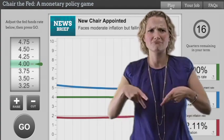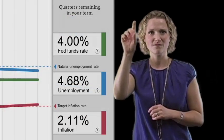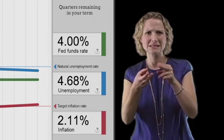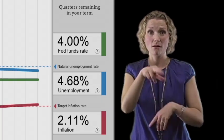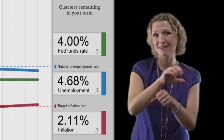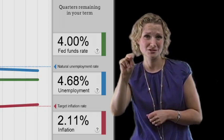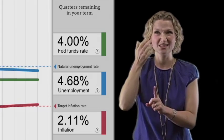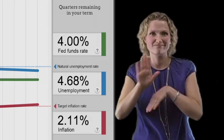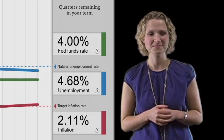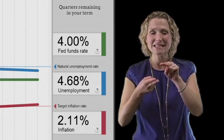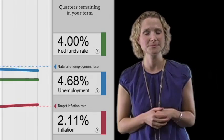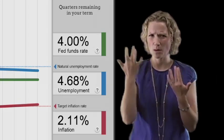For example, students will be allowed to change the federal funds rate. As they increase or decrease that rate, it will impact both unemployment and inflation — price increases. They'll see the impacts of those decisions made high up on their lives. If they increase or decrease the rate, it will either stimulate the economy or lessen economic activity.